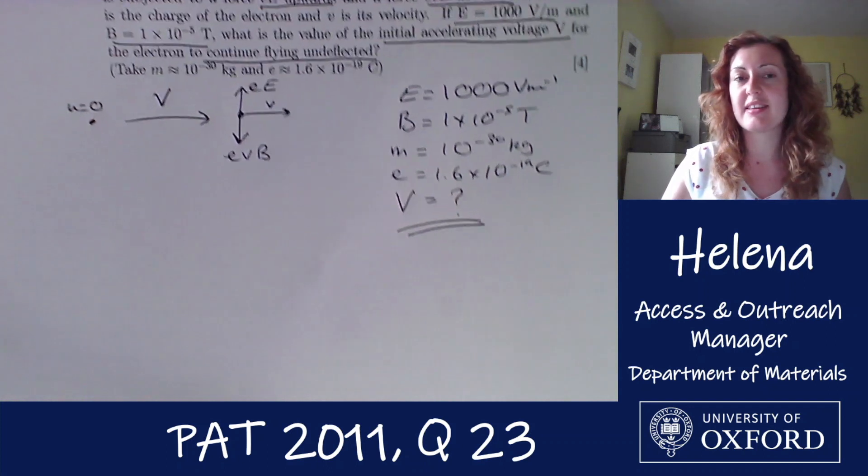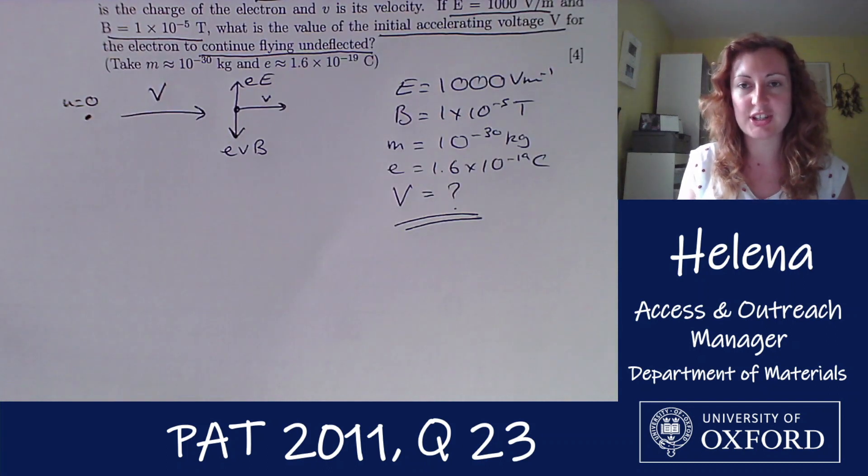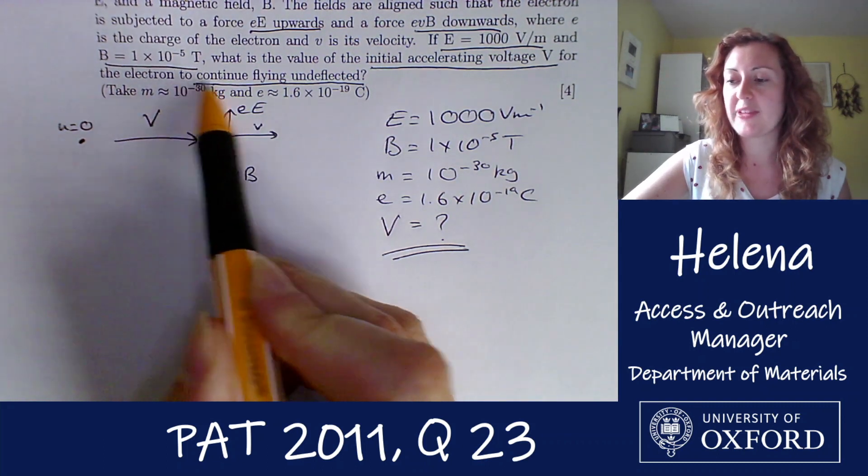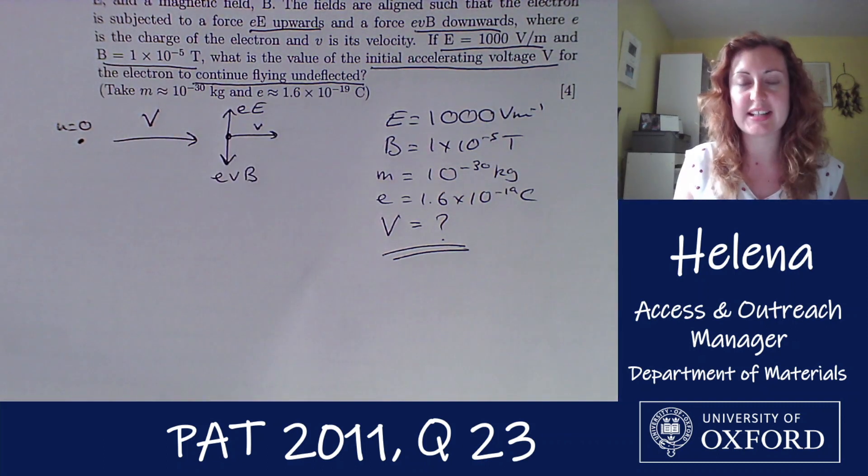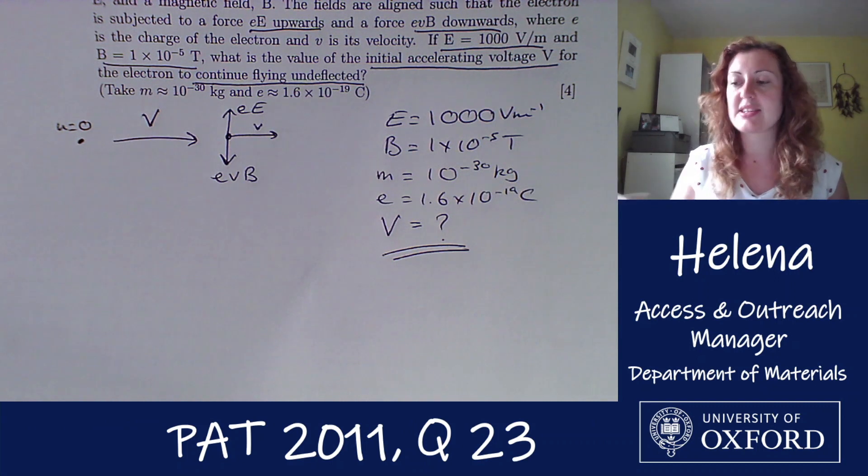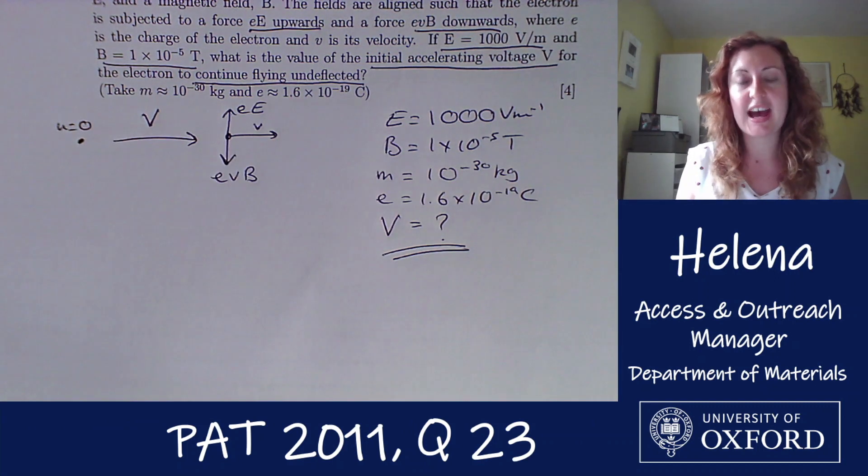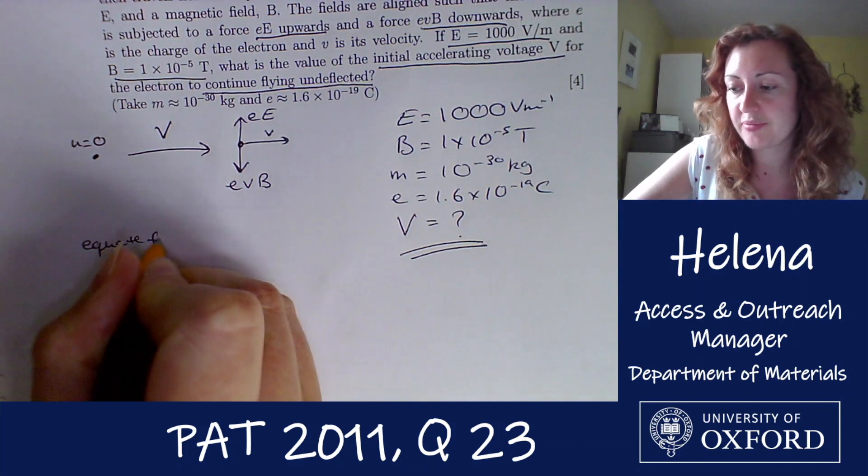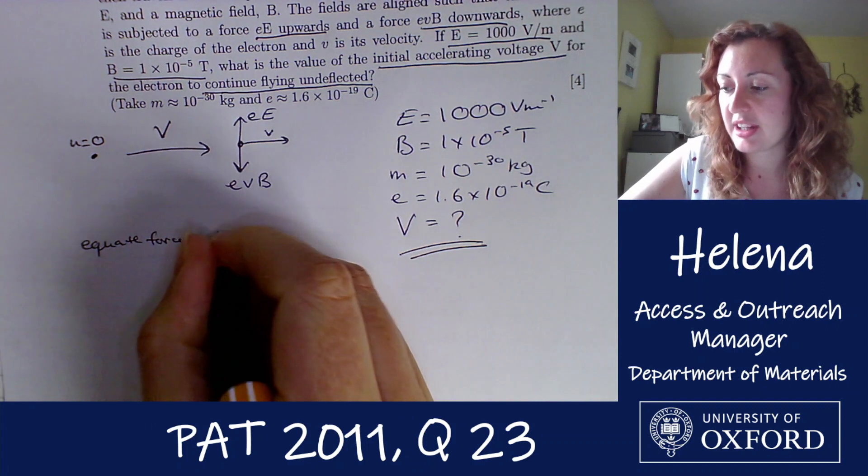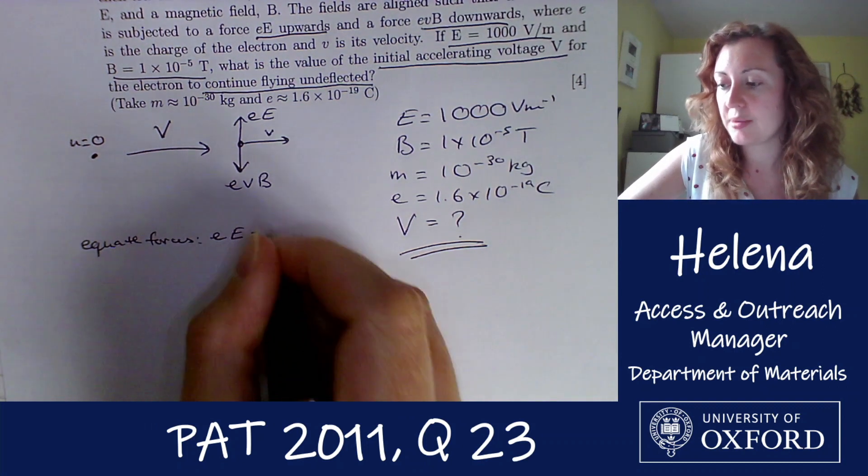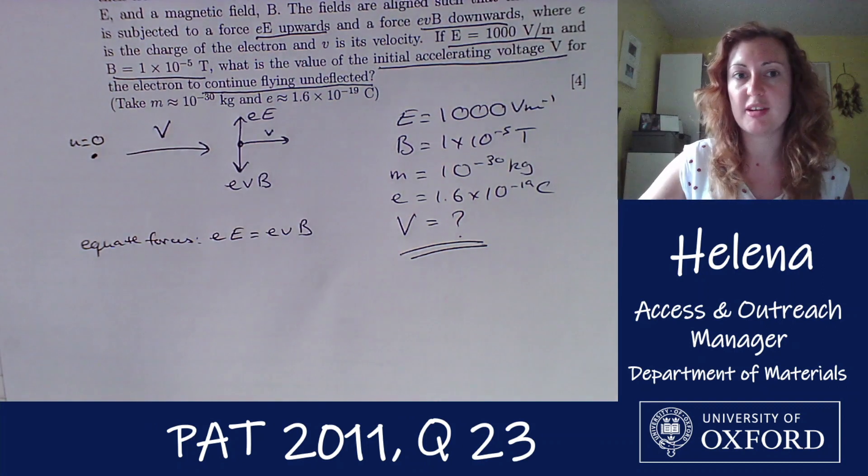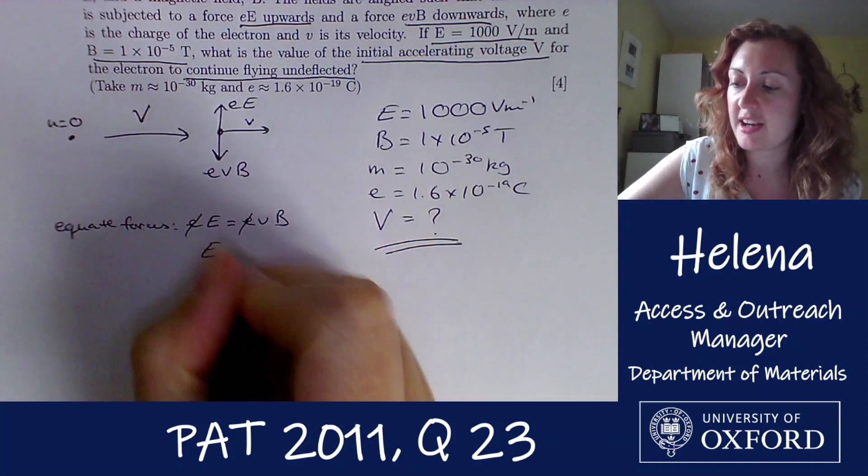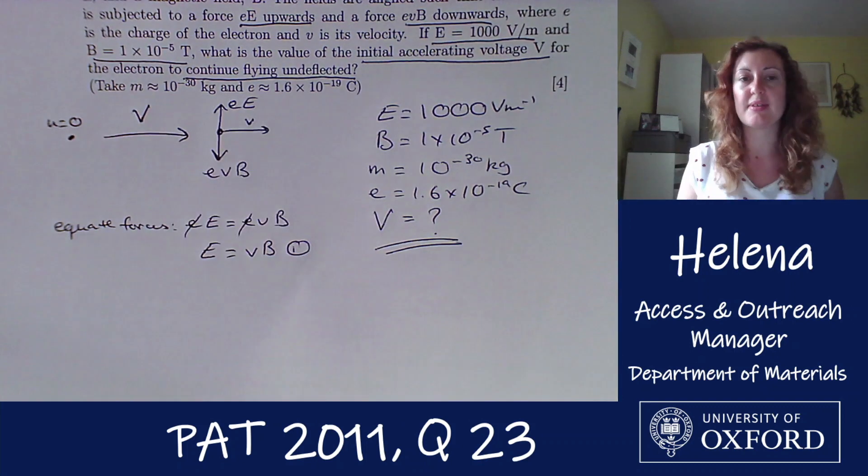So the first thing that I think about in this question are the forces and this statement which says that we want the electron to continue flying undeflected. So to me that implies that the forces up and down have to remain balanced. So if we equate the balanced forces we have eE equals evB here. So we can cancel through the lowercase e's there and we have E equals vB, and that's our first equation.